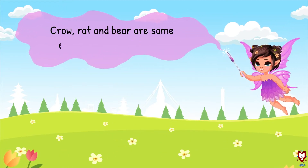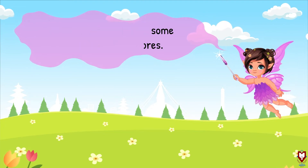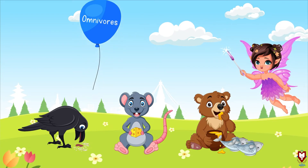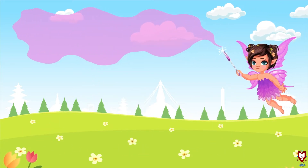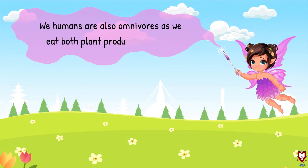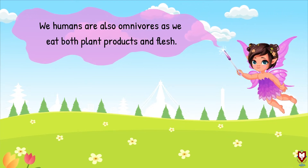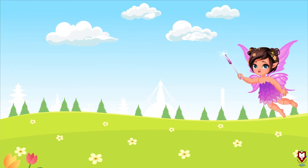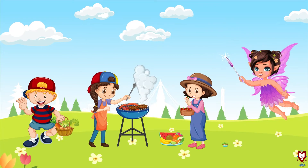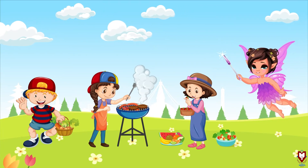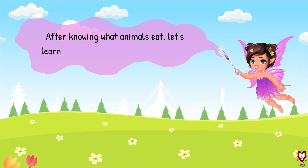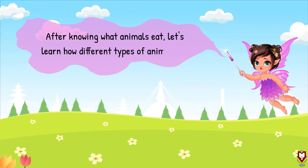Kaag, musa ra bhalu jaste janavar omnivores hun. We humans are also omnivores, as we eat both plant products and flesh. Haami manche le bot birua batta paine kura ra masu dubai khane baye ko le haami pani omnivores pitae porsho.